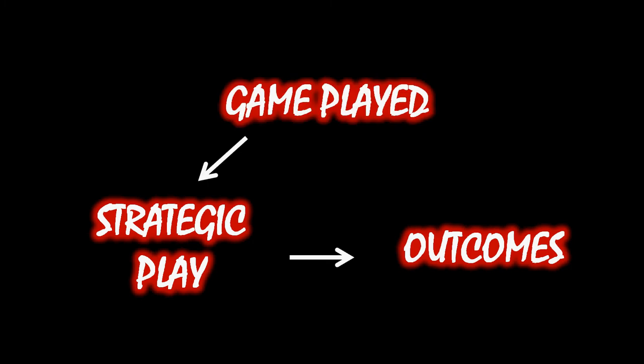This is important because if we think about the outcomes that we observe in the world, those outcomes are a function of strategic play. Something's going on in the world — a government is behaving strategically, trying to do the best it can, given that a rebel group is also behaving strategically. When they are in these sorts of situations, those strategic choices give us outcomes. But strategic play is itself a function of the game being played. So if we're only analyzing an ultimatum game, we might wonder what would happen if we had a different sort of negotiations. How would strategic play change, and might that result in a change in outcome?